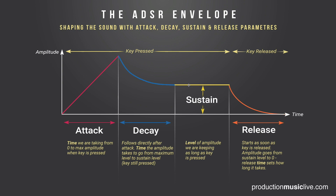Sustain is very different from those three parameters, because it's not a time parameter — it's a level. It doesn't have to do anything with time. It could be lasting for hours. Sustain in the end is decibels. We are holding the signal on while we are still pressing the key.